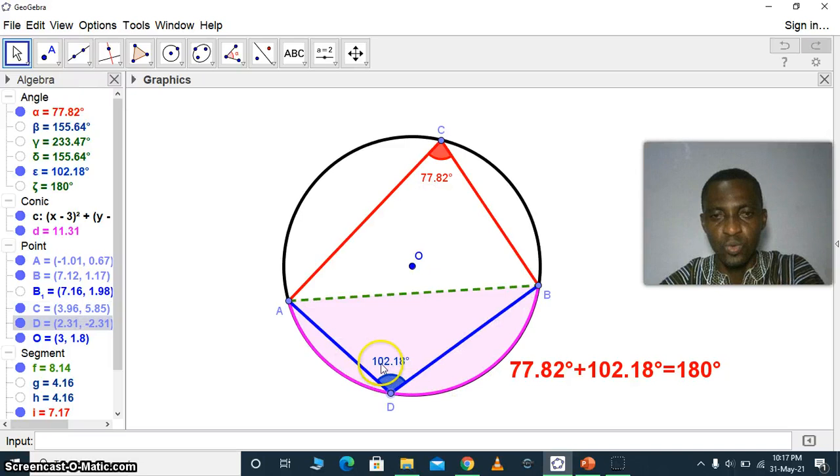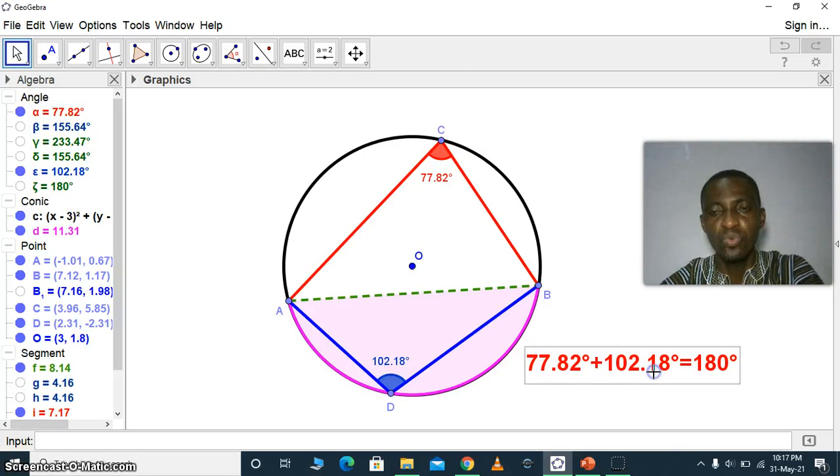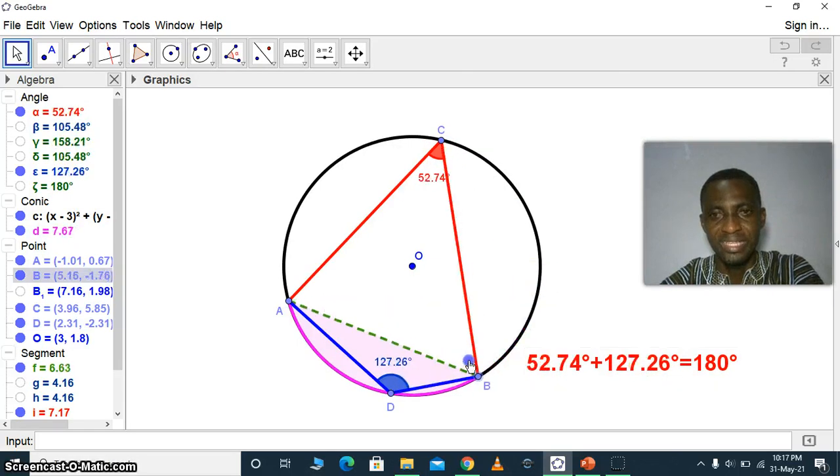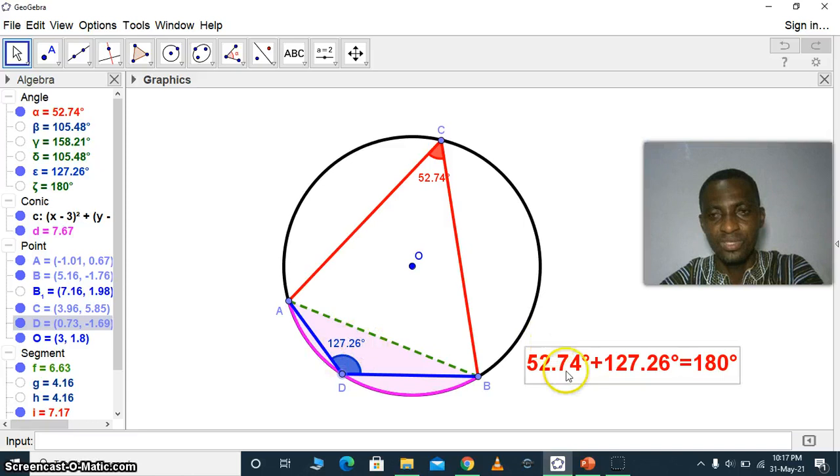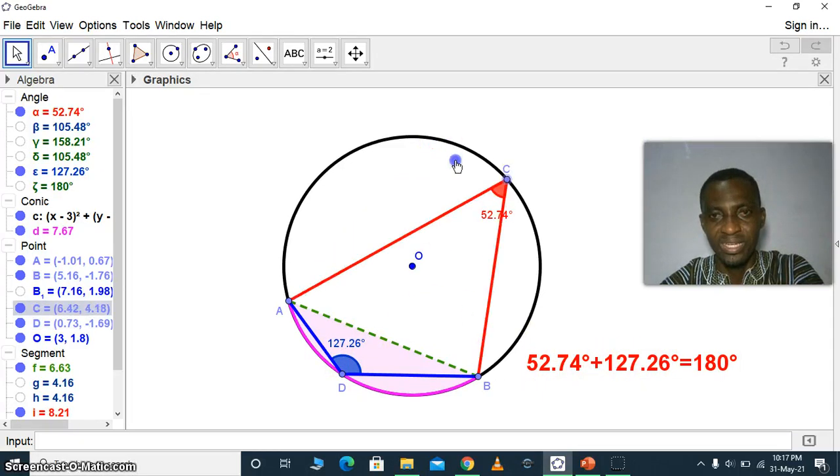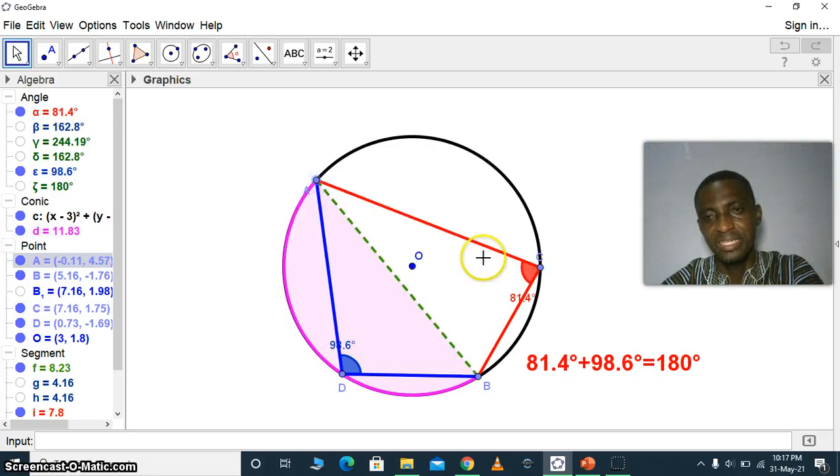And you can see that as we change the directions here, the angles have changed, but yet when we sum the two, you get 180 degrees. And so no matter how this can be oriented, you can still see the angle here and the angle there in opposite segments are supplementary—they add up to 180 degrees.